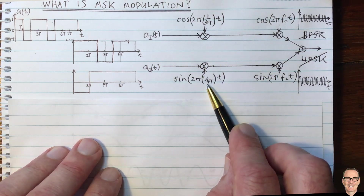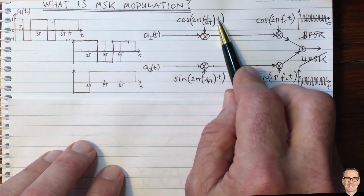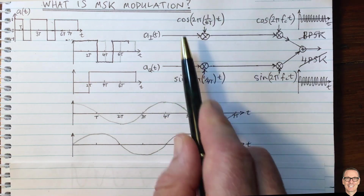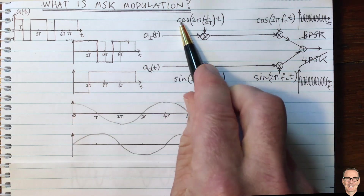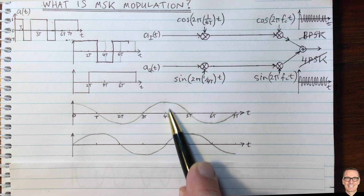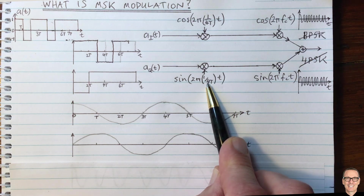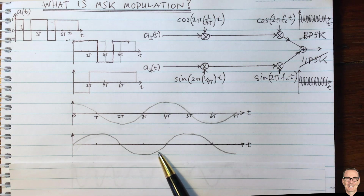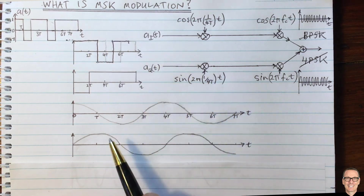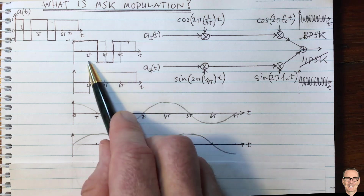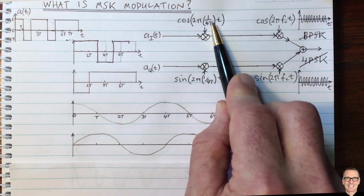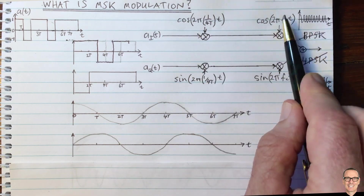Let's really understand this by looking at the waveforms. I'm going to plot the cosine function and sine function at frequency 1/(4T). The cosine starts at 1 and has a period of 4T, while the sine starts at 0 and has the same period. We're going to multiply our data sequence by this low-frequency waveform — think of it as pulse shaping — and then multiply by the high-frequency carrier.